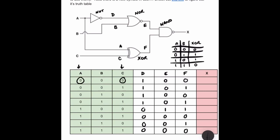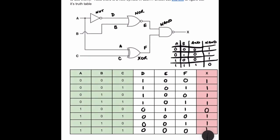The final gate is a NAND gate. A regular AND gate would produce zero, zero, zero, one — a NAND gate gives the opposite: one, one, one, zero. We look at columns F and E to get our final output X. The only time we produce a zero is when both F and E are one. Working through the circuit, our final output is one, one, one, one, zero, one, one, one.